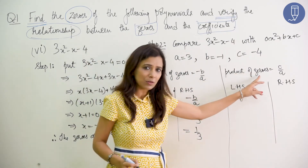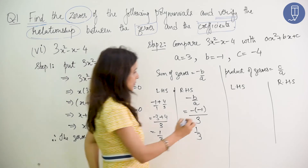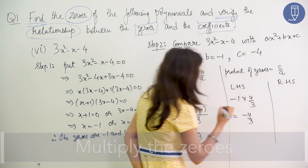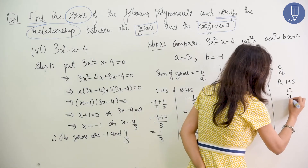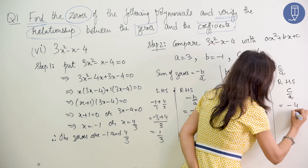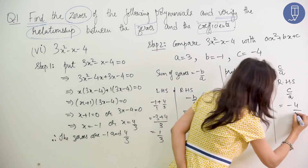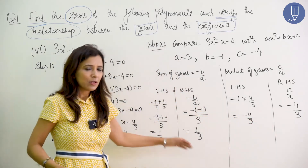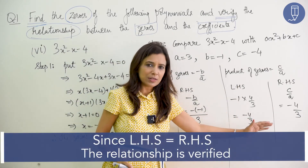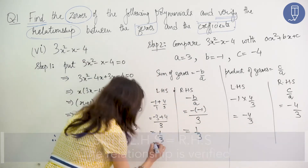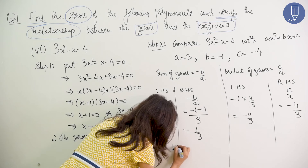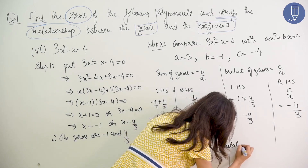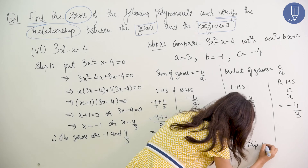Product of zeros: minus 1 multiplied by 4 by 3 equals minus 4 by 3. The right hand side is c by a: c's value is minus 4, and a's value is 3, so we get minus 4 by 3. LHS equals RHS. Since LHS is equal to RHS, the relationship is verified.